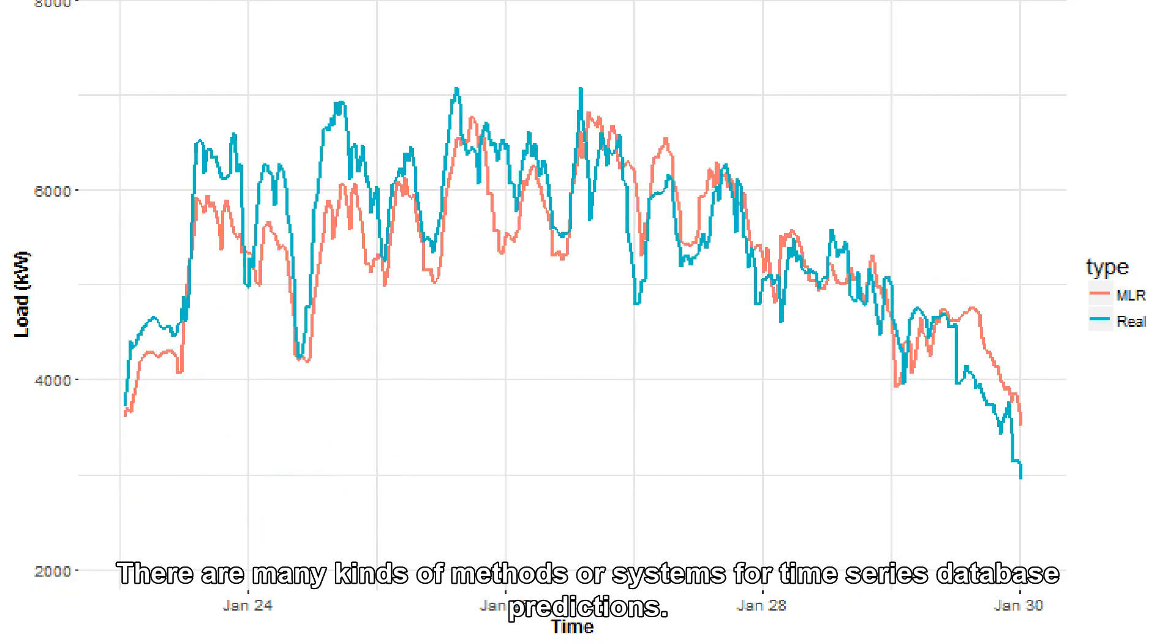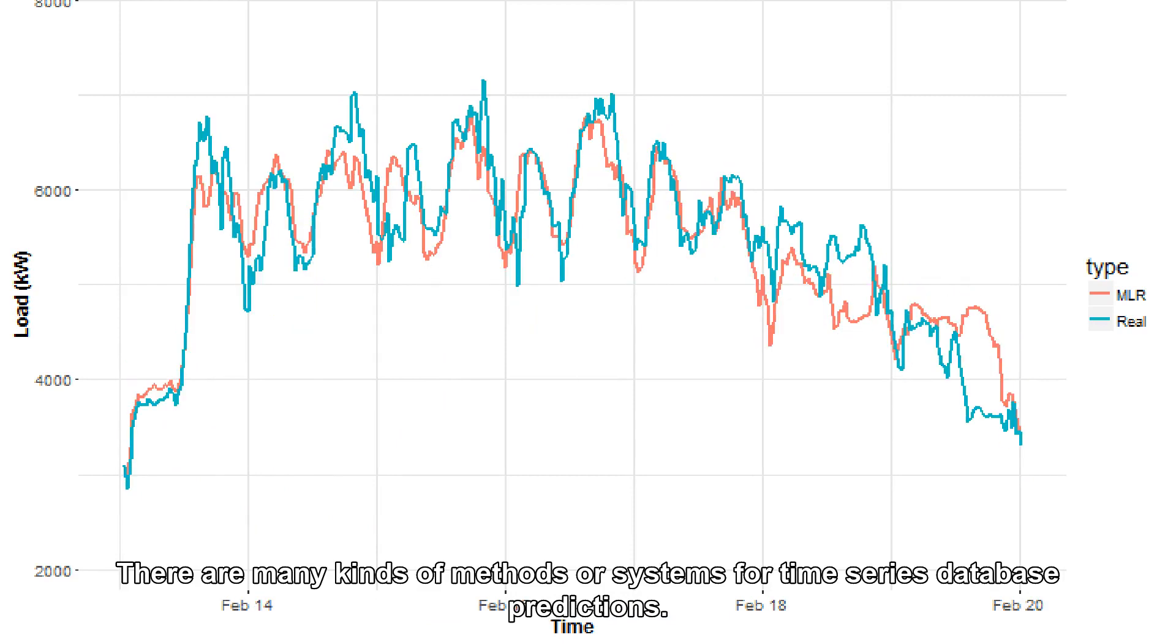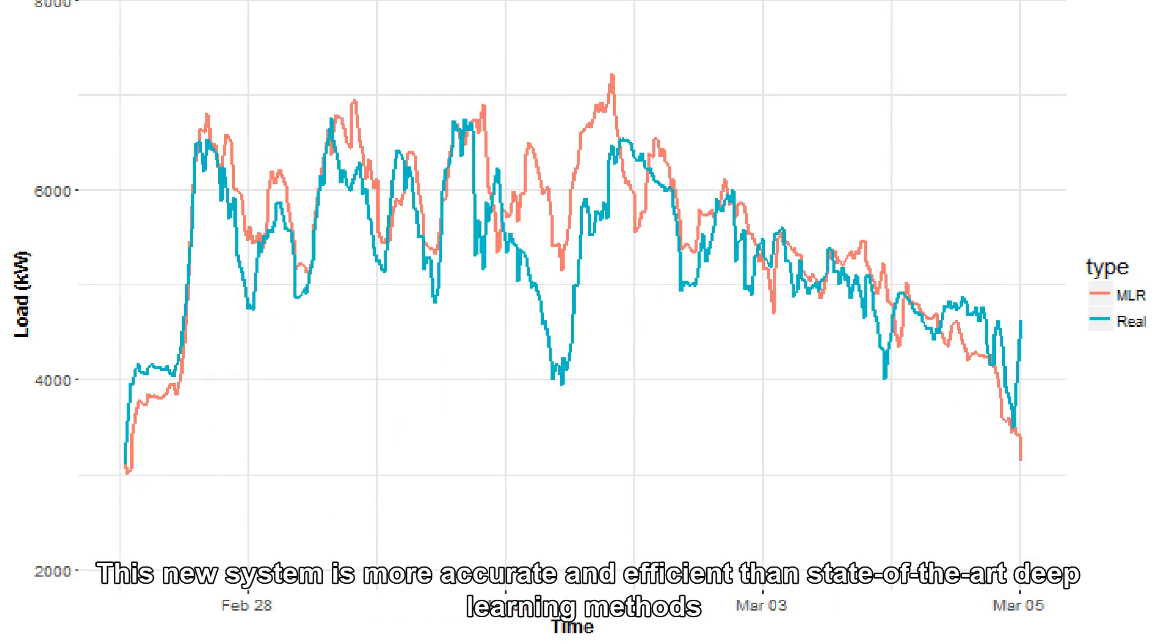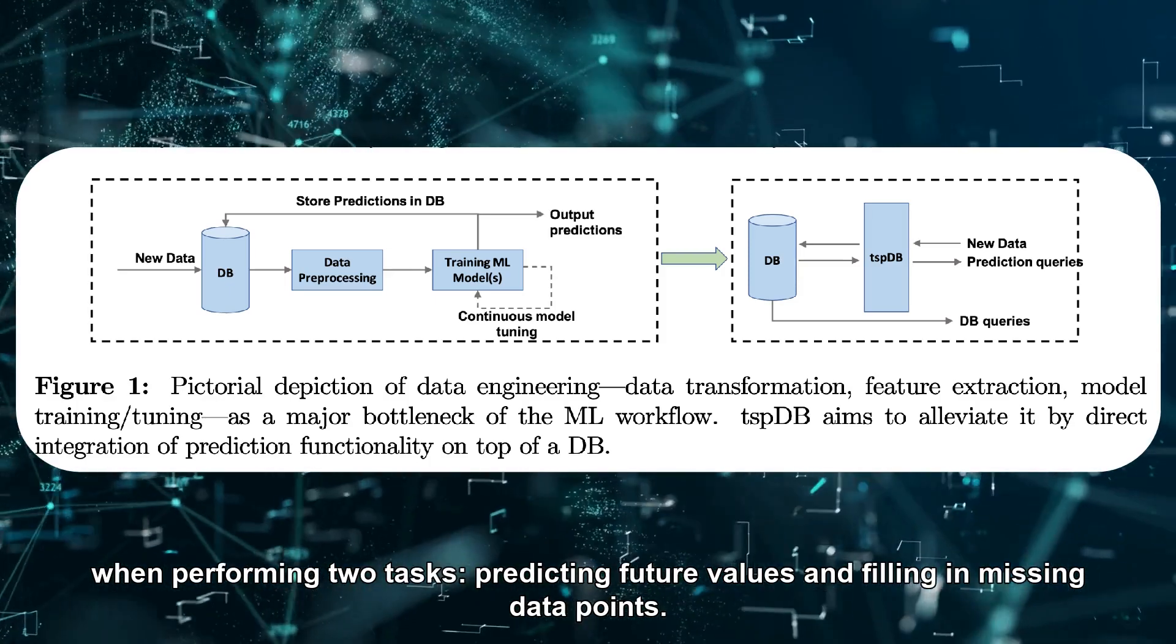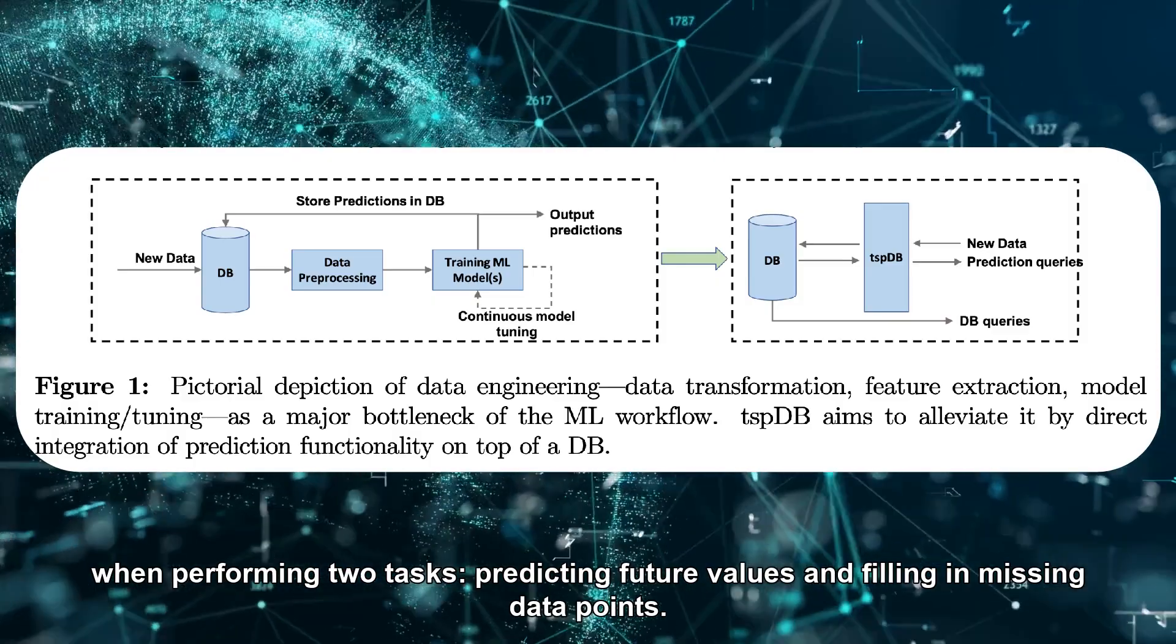There are many kinds of methods or systems for time series database predictions. This new system is more accurate and efficient than state-of-the-art deep learning methods when performing two tasks: predicting future values and filling in missing data points.